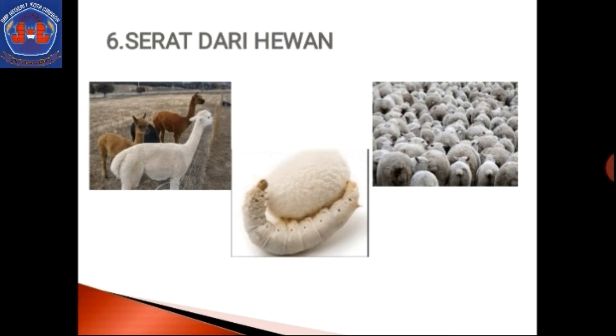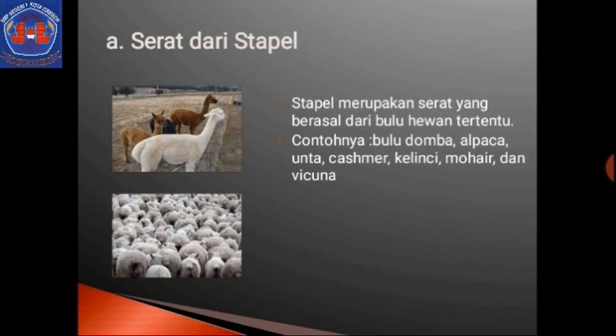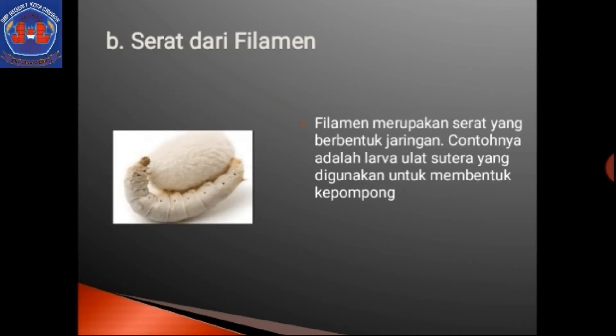Selanjutnya kita akan bahas serat dari hewan. Stapel merupakan serat yang berasal dari bulu hewan tertentu, misalnya bulu domba, bulu alpaka, unta, kashmir, kelinci, mohair, dan vikuna. Filamen merupakan serat yang berbentuk jaringan. Misalnya larva ulat sutra yang digunakan untuk membentuk kepompong. Serat dari filamen ini menjadi kain sutra yang biasa digunakan menjadi pakaian.